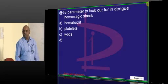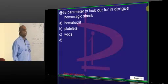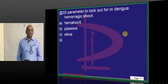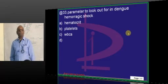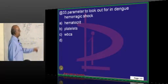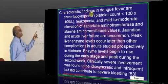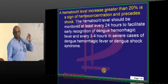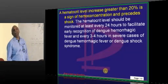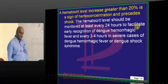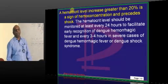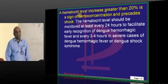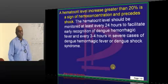In dengue hemorrhagic fever, what do you measure every day? Not platelets - measure hematocrit. Hematocrit increase greater than 20% is a sign of hemoconcentration and shock. Dengue increases capillary permeability, all fluid leaks out, leading to intravascular dehydration and rising hematocrit. Dengue can be dengue fever or dengue hemorrhagic shock - shock is more ominous.